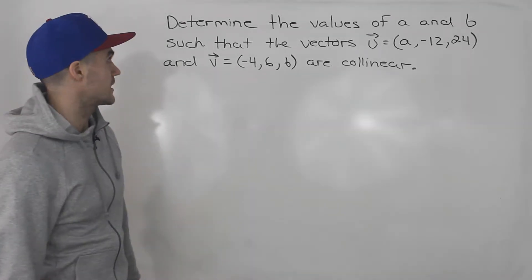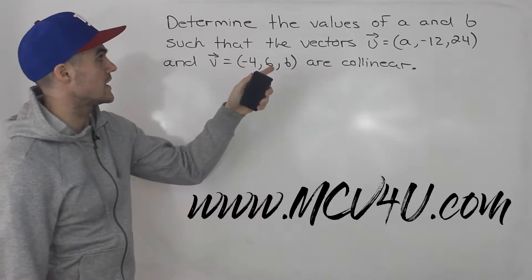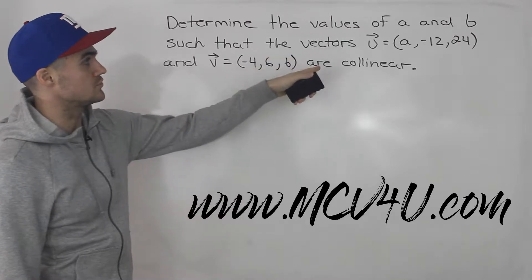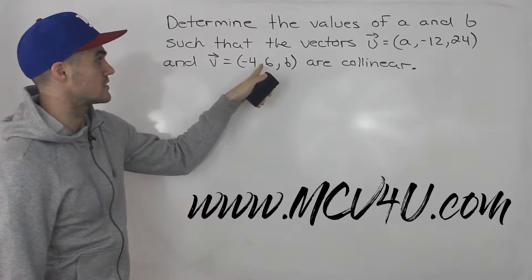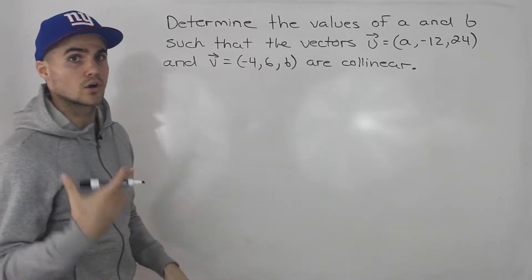What's up everybody, Patrick here. Moving on to the next question, we have to determine the values of A and B such that the vectors U equals (A, -12, 24) and V equals (-4, 6, B) are collinear.